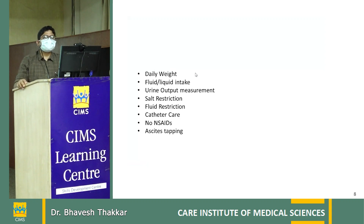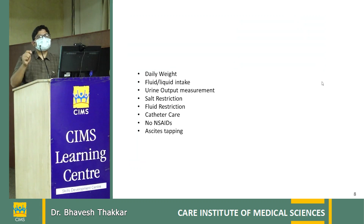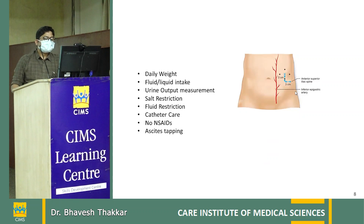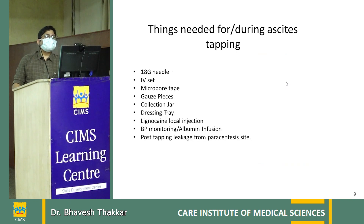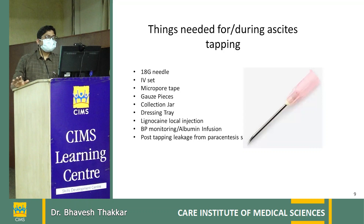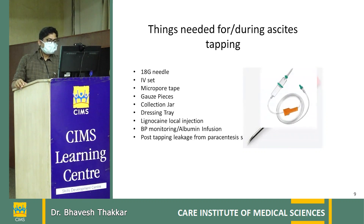For paracentesis (ascites tapping), the ideal location is 3 cm medial and 3 cm above the anterior superior iliac spine on the left side. Equipment required includes: an 18-gauge needle (not blunt tip), IV set with rubber tubing, sterile gauze pieces, and a sterile collection jar. Do not use a large non-sterile bottle — it is a source of bacterial contamination into the sterile abdominal cavity.